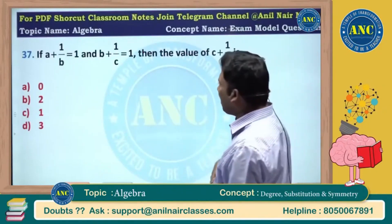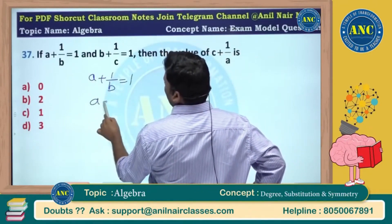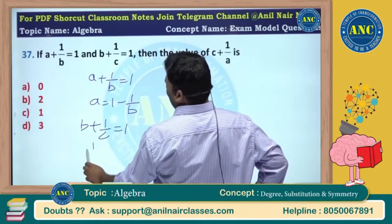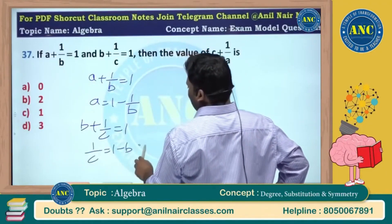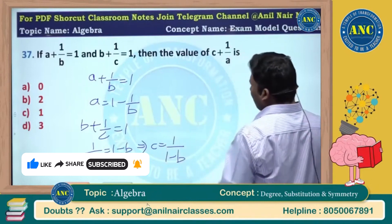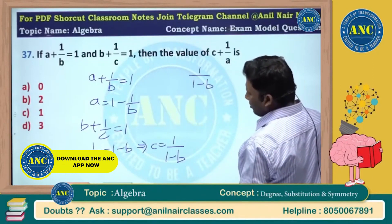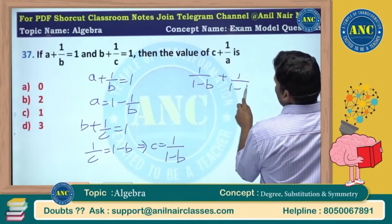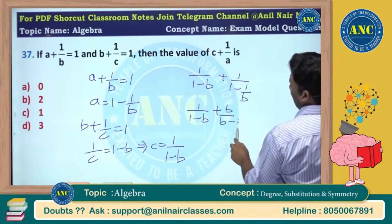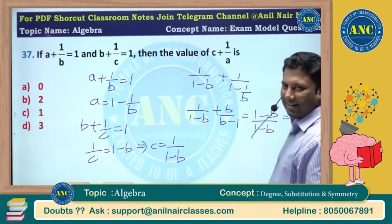Another question — this is an exact replica question. Given a plus 1 by b equivalent to 1, so a equivalent to 1 minus 1 by b. And b plus 1 by c equivalent to 1, so 1 by c equivalent to 1 minus b, meaning c is 1 by 1 minus b. Convert a in terms of b and convert c in terms of b: it is 1 by 1 minus b, plus 1 by a, which is 1 by 1 minus 1 by b, giving 1 by 1 minus b plus b by b minus 1. This is equivalent to 1 by 1 by 1 minus b, which cancel out to 1. Very very easy question.